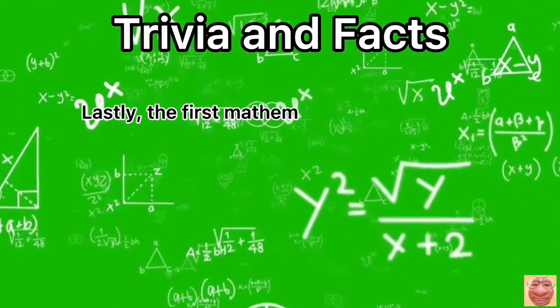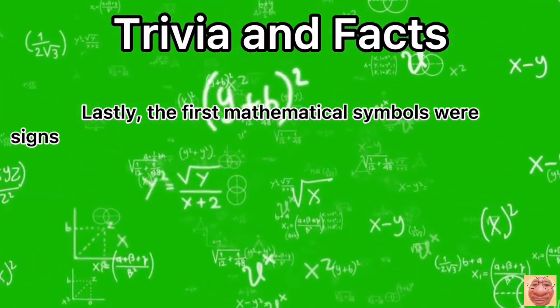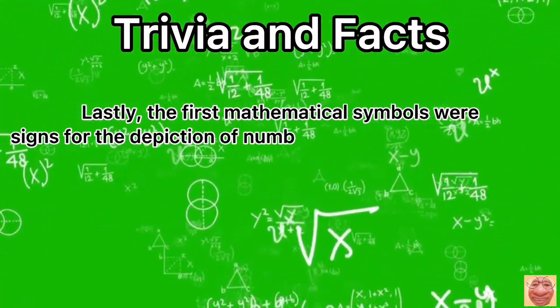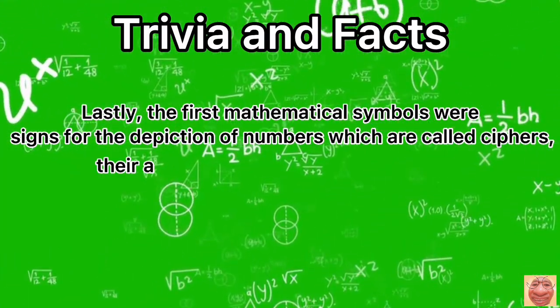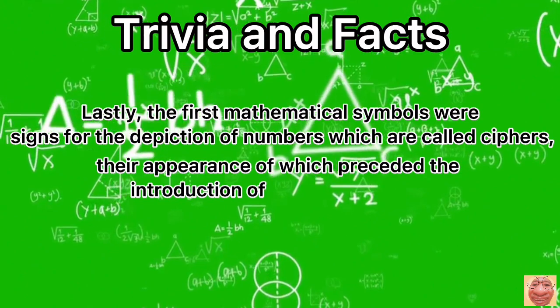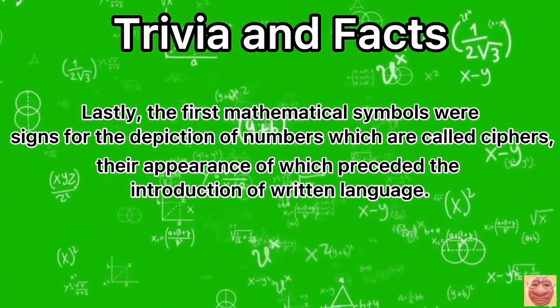Lastly, the first mathematical symbols or signs for the depiction of numbers which are called ciphers, their appearance of which preceded the introduction of written language.